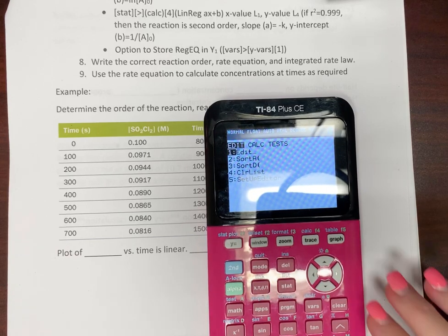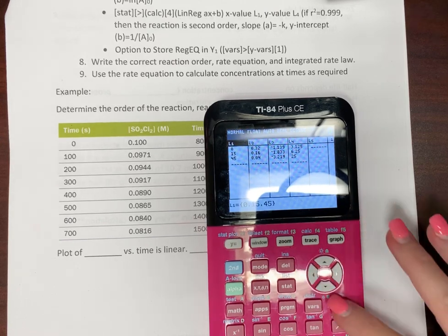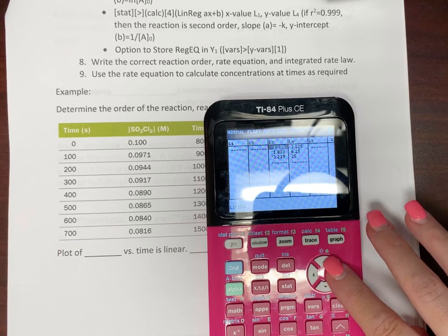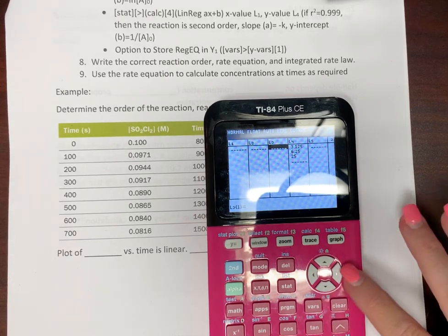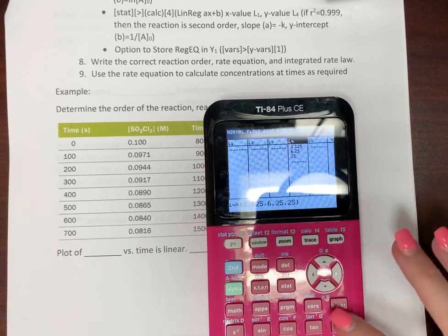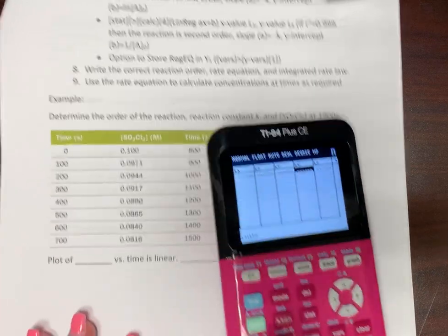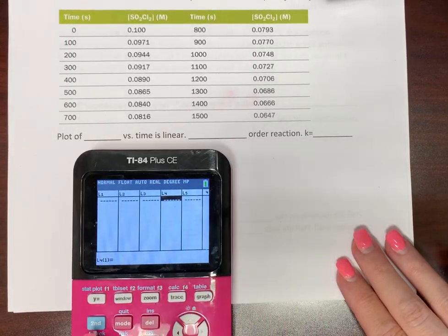So, the first thing you want to do is we've got to plot all this data. And so it's easier for me to do this on my calculator. So we're going to go into stat and edit. And what I need to do is I need to clear all of these out. So go up to the top of my list, hit clear and enter, clear and enter, go over, clear and enter. Okay, hopefully you can see this now.